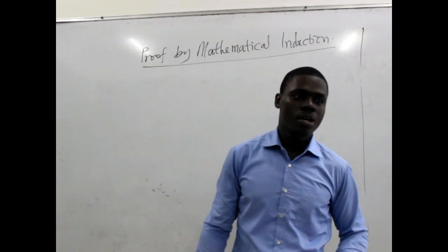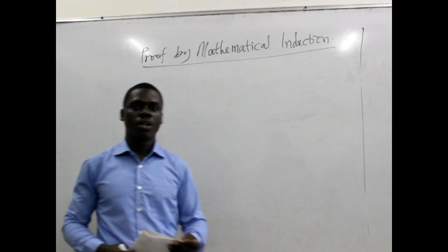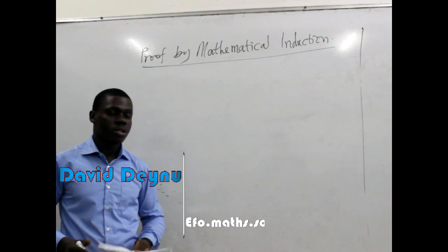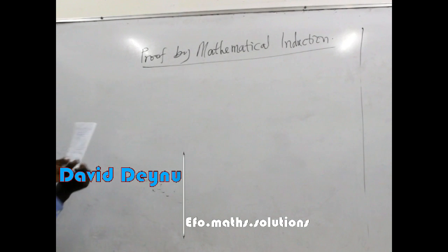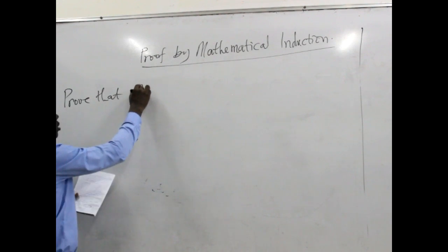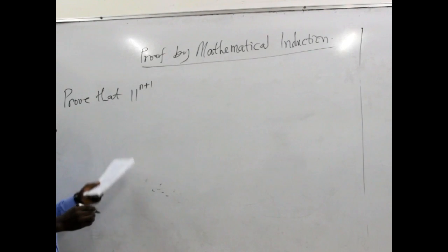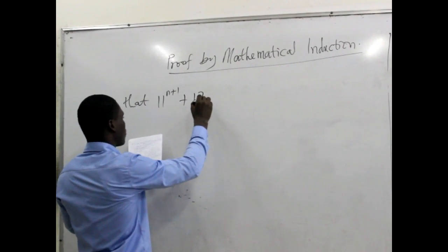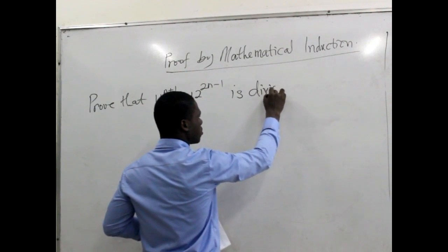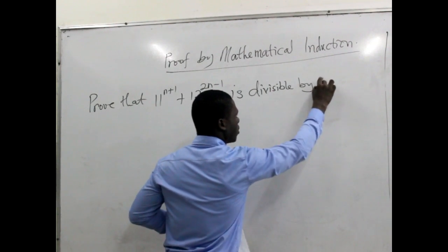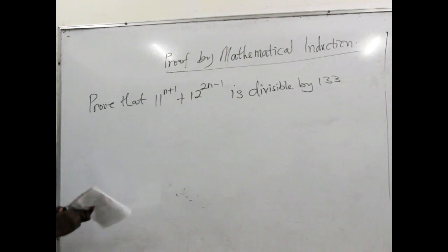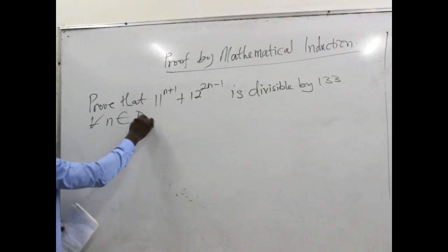This is FOMATS Solutions. You are warmly welcome to yet another interesting example as far as proof of mathematical induction is concerned. We are going to look at this example. We are proving that 11^(n+1) plus 12^(2n-1) is divisible by 133, for all n belonging to the set of natural numbers.